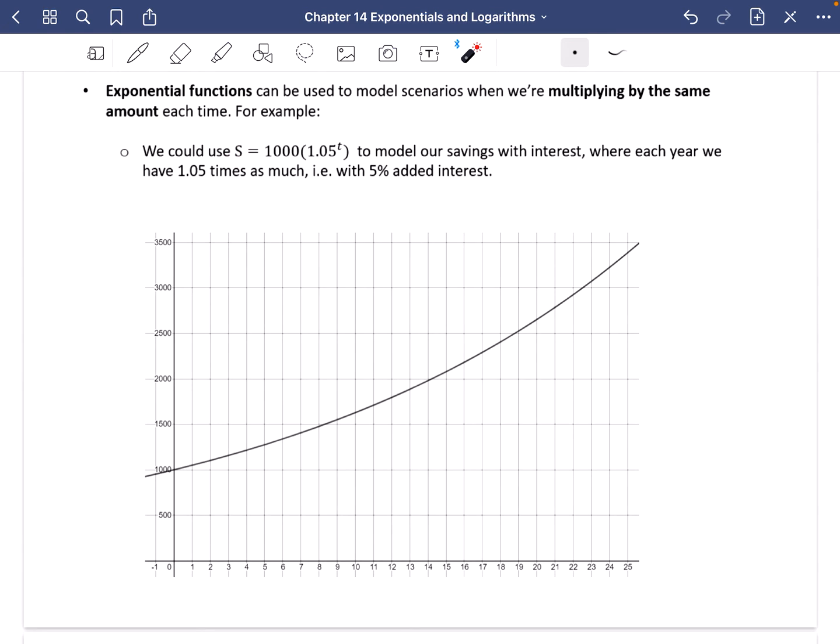And these are some things you should be familiar with from GCSE. So for example, we could use S equals 1000 multiplied by, there's actually a secret multiply symbol in here, 1.05 to the power of T, either of those things mean the same thing. We could use that formula to model our savings in a bank account with interest, where each year we have 1.05 times as much, i.e. with a 5% added on interest. Multiplying by 1.05 is adding 5% or increasing 5%. And so this graph that I've got drawn here is an exponential function. You can see that at the start, where there's zero years, there's £1,000 in the bank. And the overtime is increasing by 5% each year. It doesn't have a straight line like a linear model, but it's got this curved path that we've got here, which is an exponential model. So you can already see it's going to have some uses in finance, meaning it's going to be a very important function for us to study.